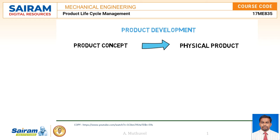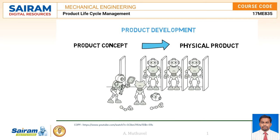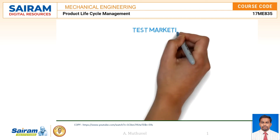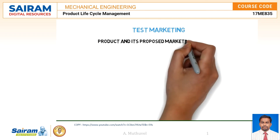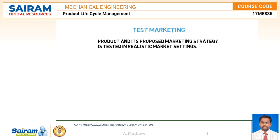In the product development stage, the product concept is converted into a physical product. The research and development department will develop and test one or more physical versions of the product concept. Developing a successful prototype can take days, weeks, months, or even years depending on the product and prototype methods. The last stage before commercializing is test marketing, where the product and its proposed marketing program are tested in realistic market settings.